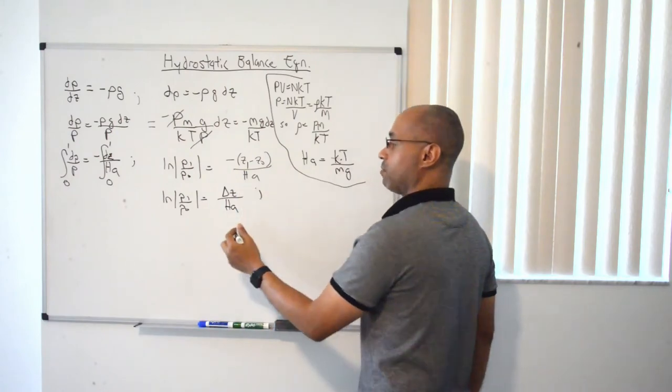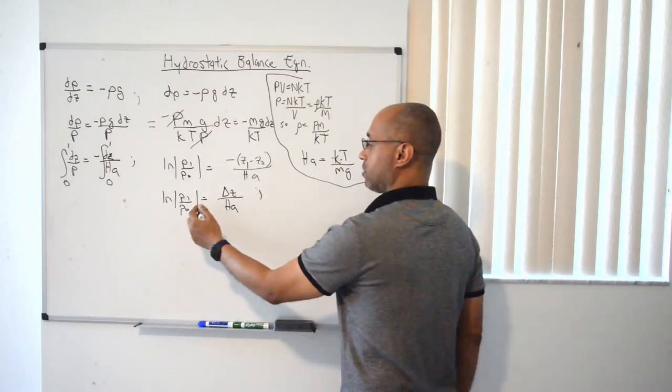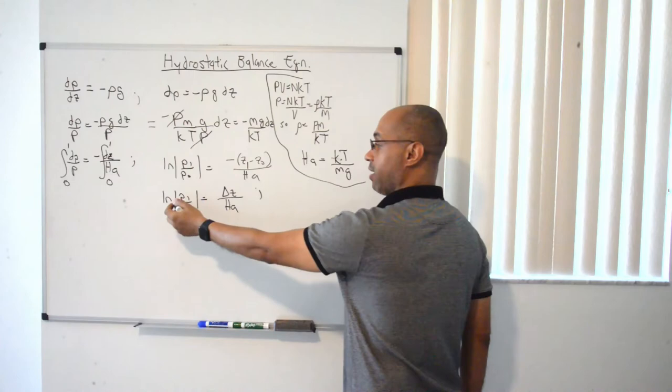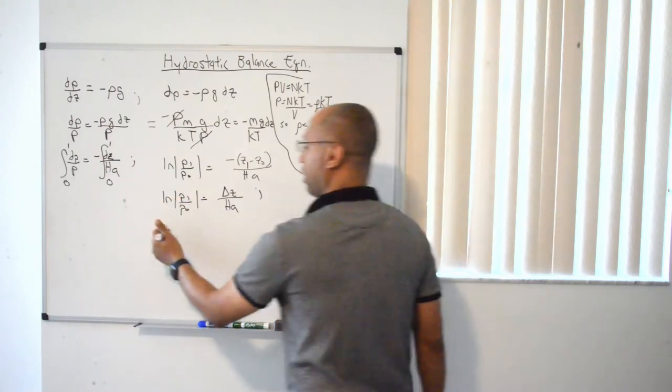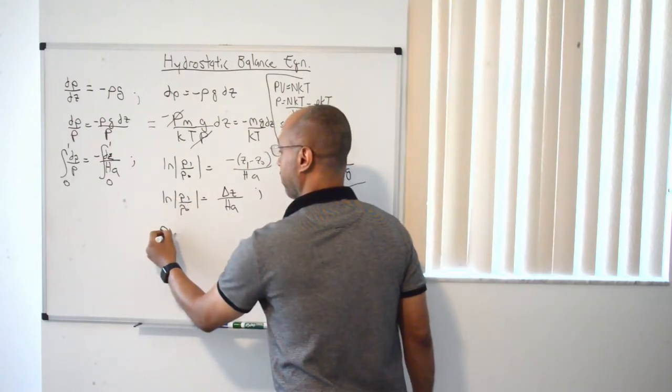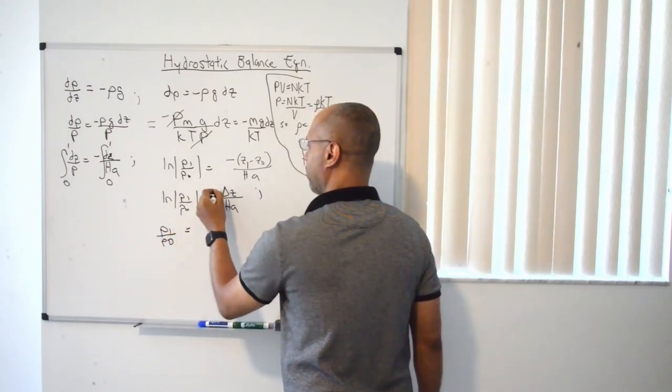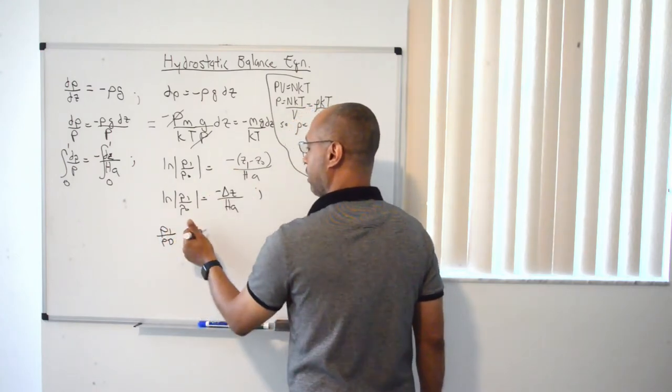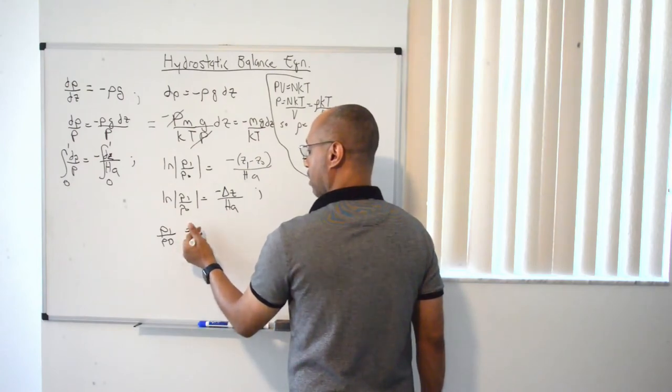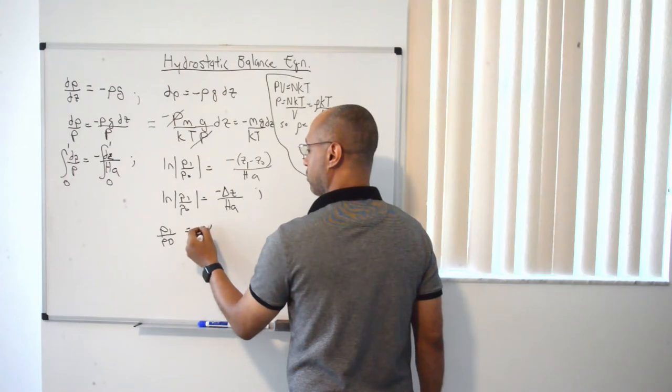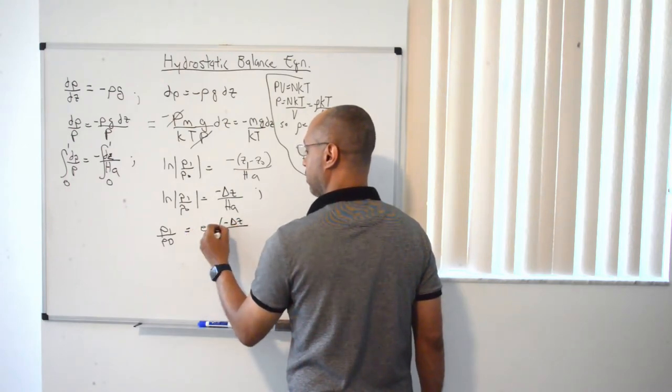And then what the next step would be would be to take the exponential on both sides. So you get rid of the natural log, and what you're left with is, we're almost there. P1 over p0 is equal to, and by the way, it's a negative term here. P1 over p0 is equal to exponential of negative Δz over hA.